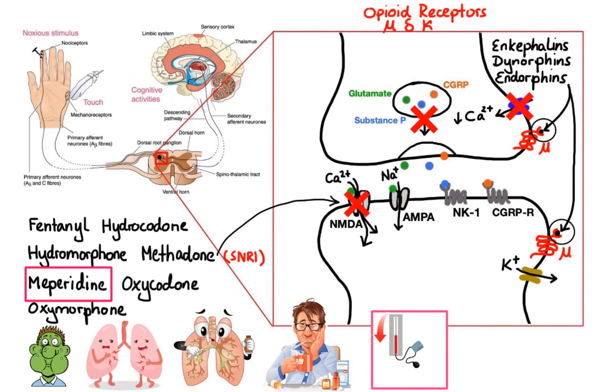Furthermore, when given by injection, morphine and meperidine can cause dilation of cutaneous blood vessels, which results in the flushing of skin of the face, neck, and upper thorax. Meperidine in particular produces tachycardia due to its structural similarity to atropine. Other opioids generally produce a dose-dependent bradycardia by increasing the centrally mediated vagal stimulation.